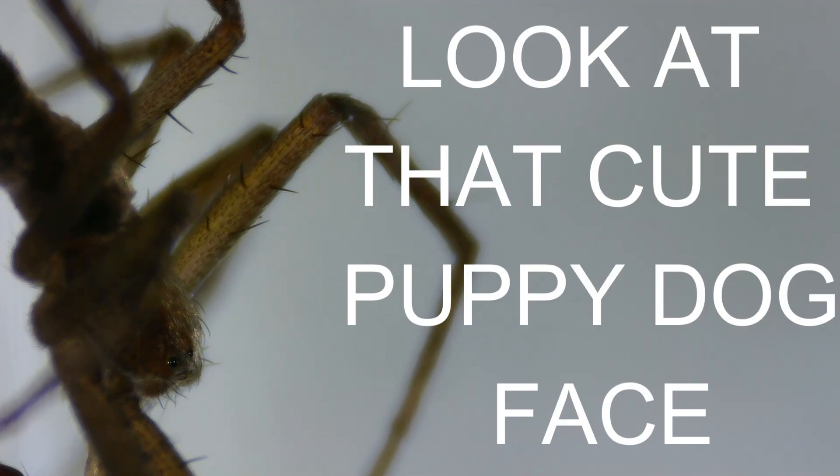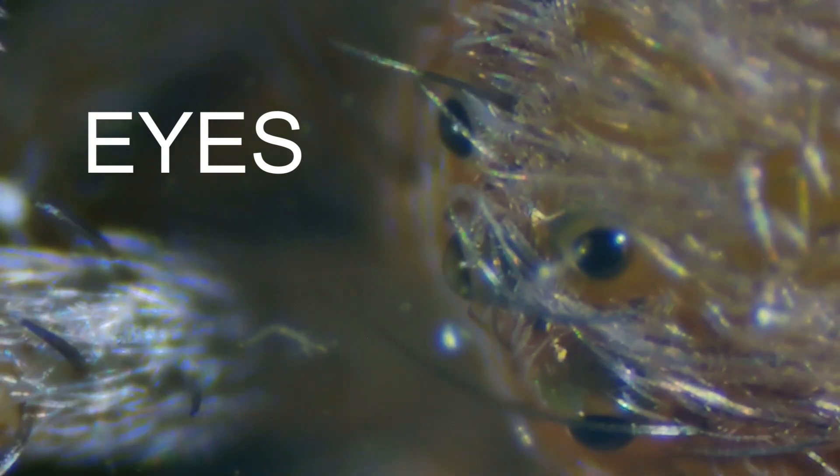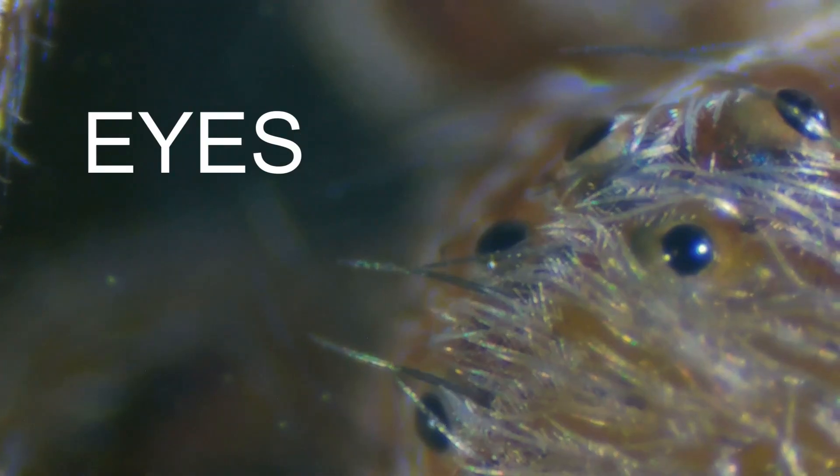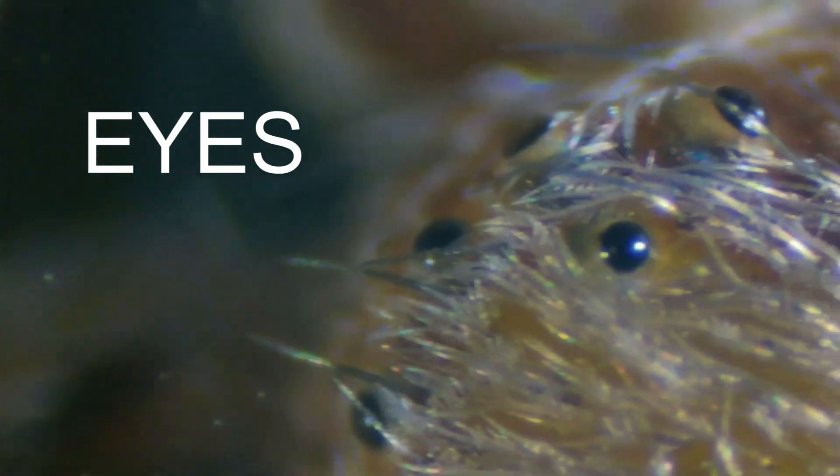Those eight delicate legs, covered in fine sensory hairs, are the spider's primary tools. These hairs, known as setae, are extremely sensitive to the faintest of air currents.